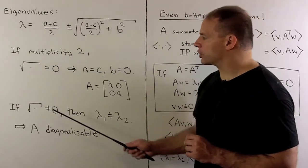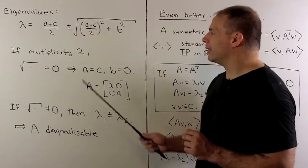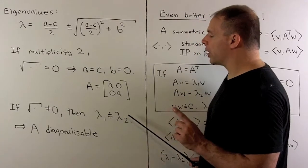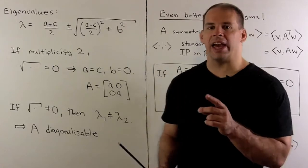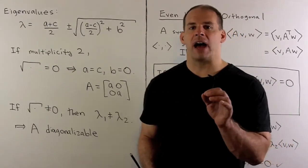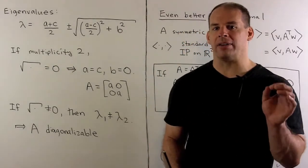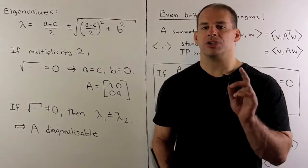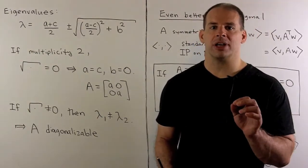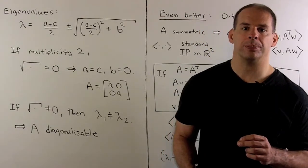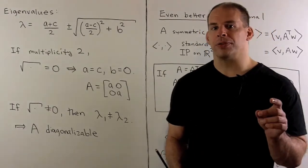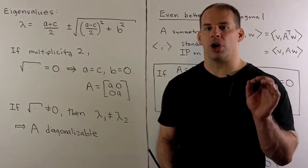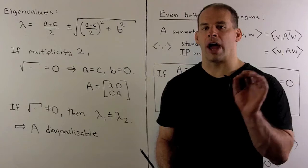Now if the square root is non-zero, then the two roots are not equal, so A will be diagonalizable. In this case, each eigenvalue produces a non-zero eigenvector, and those eigenvectors are going to be linearly independent. So we'll have a basis of eigenvectors, which is what we need to be diagonalizable. By the spectral theorem, we can do better than that. The first step is to show that those eigenvectors are actually orthogonal.